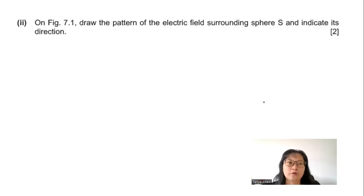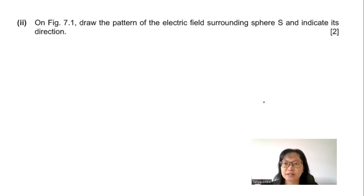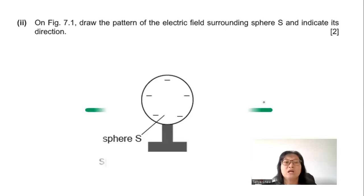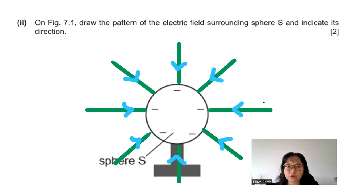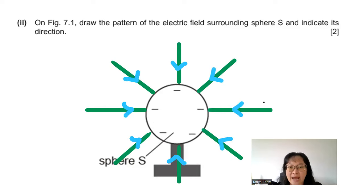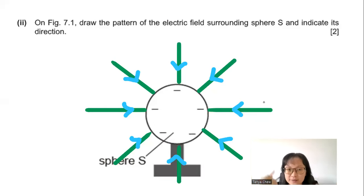Part B2: On figure 7.1, draw the pattern of the electric field surrounding sphere S and indicate its direction. Direction is very important. Since this is a negatively charged sphere, the electric field lines point inward — the arrows direct towards the negatively charged sphere.